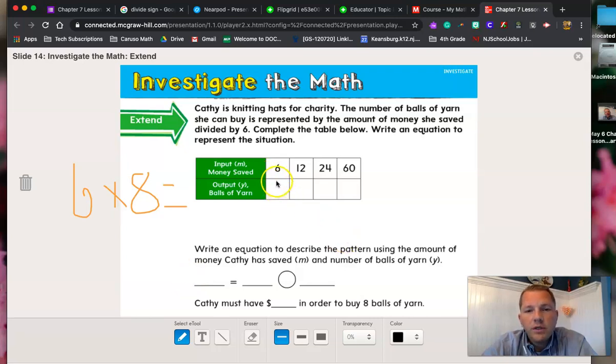Alright, so filling in this chart, we did 6 divided by 6 gave us 1. 6 divided by 12 gave us 2. 24 divided by 6 gave us 4, and 60 divided by 6 gives us 10.